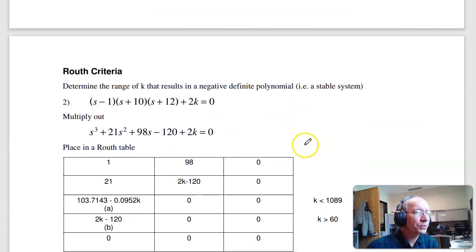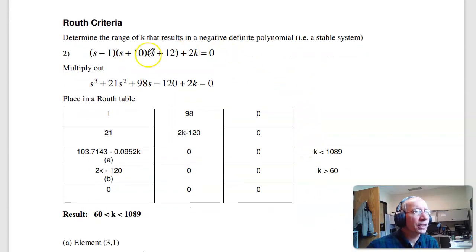Problem 2. Problem 2 is the Routh criteria. For this polynomial, what range of k produces a stable polynomial or negative definite polynomial? To do that, multiply it all out and then set up a Routh table.